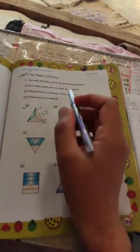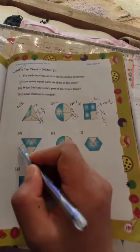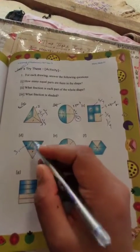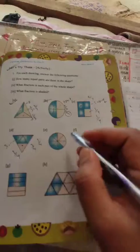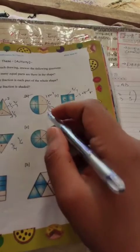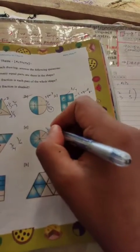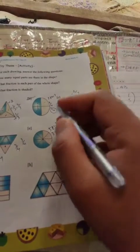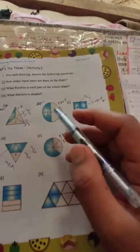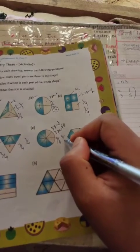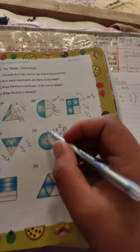How many parts are there in the shape? Three parts. What fraction is each part? The fraction is 5 by 8 or 3 by 8. What fraction is shaded? 5 by 8.